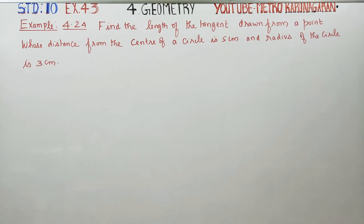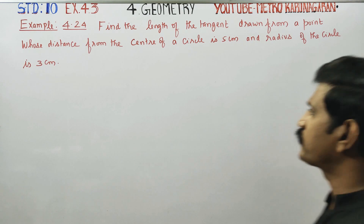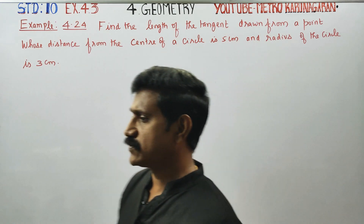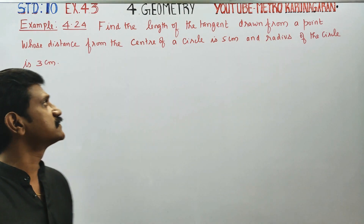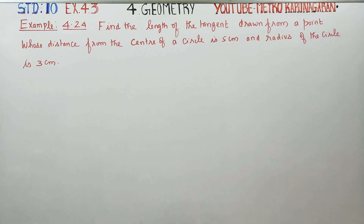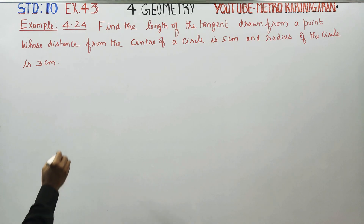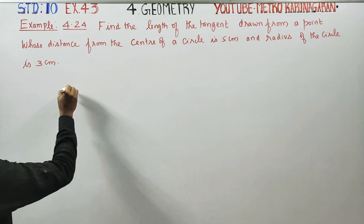Hello 10th standard students. In example 4.24, find the length of the tangent drawn from a point whose distance from the center of the circle is 5 centimeters and the radius of the circle is 3 centimeters.